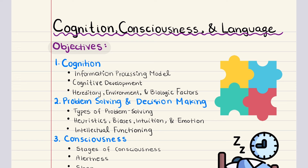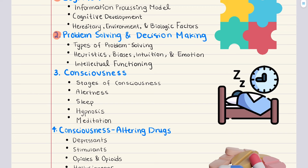In this chapter, we're going to cover the following objectives. The first objective is titled Cognition — we'll define cognition, talk about the information processing model, cognitive development, and factors that affect cognitive development like genetics, environment, and biological factors. Then we'll move into the second objective, Problem Solving and Decision Making, covering different problem solving techniques, heuristics, biases, intuition, emotion, and intellectual functioning.